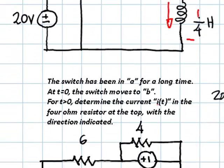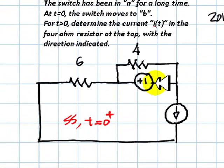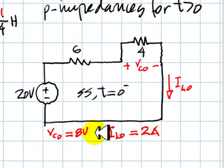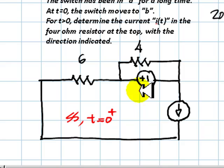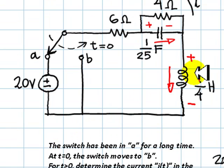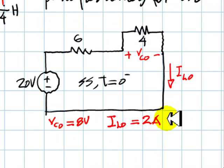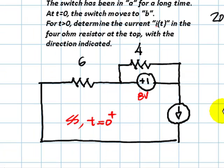But in this snapshot we represent the capacitor as a voltage source with the value of Vc0 that we computed before, 8 volts. And we represent the inductor as a current source with the value Il0, 2 amps.